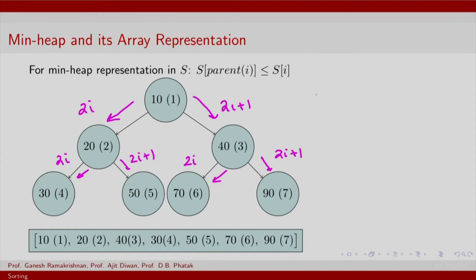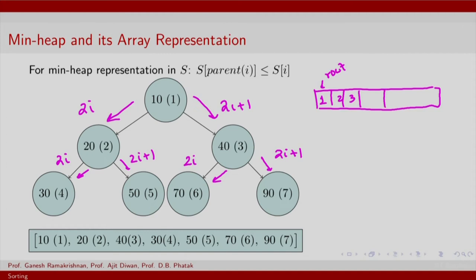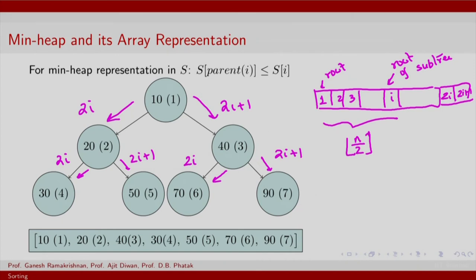The basic idea is as follows. The root of the entire tree is at position 1. Its children are at positions 2 and 3, and in general for an element with index i — which is the root of some subtree — its immediate children are at positions 2i and 2i+1. For i to have children, all these subtree roots must lie within the first n/2 elements of the array.